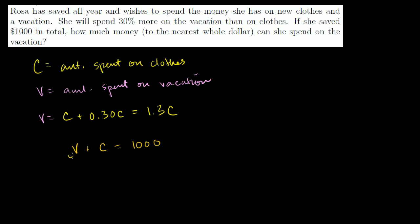And so we know what the vacation is in terms of the clothes. We can do a little substitution. The vacation is going to be 1.3 times the clothes. So we can substitute there. So you have 1.3 times the clothes. That's the vacation expenditure. Plus the amount she spends on the clothes is equal to 1,000. This is 1.3 plus 1 is 2.3 times the amount she spends on clothes will be equal to $1,000. Divide both sides by 2.3.